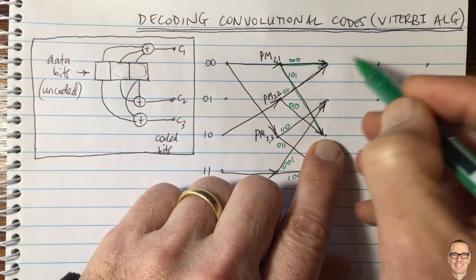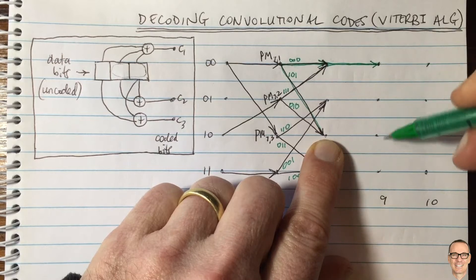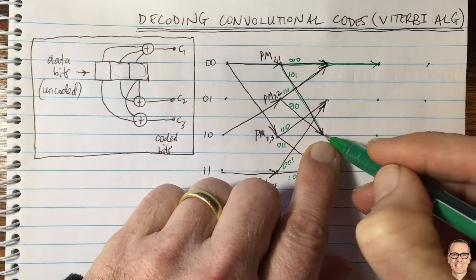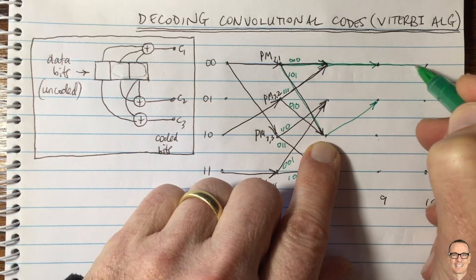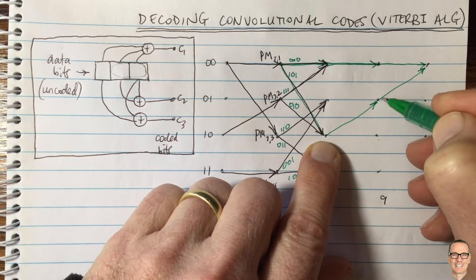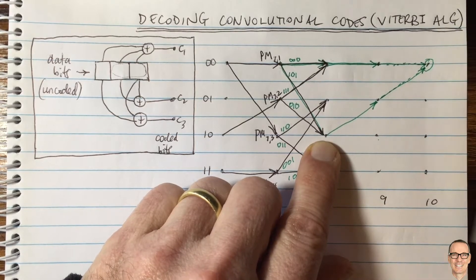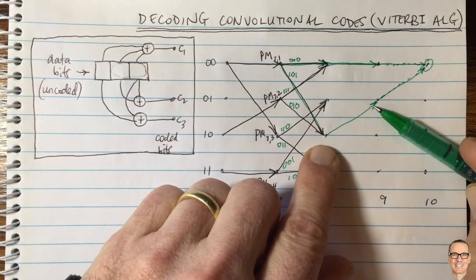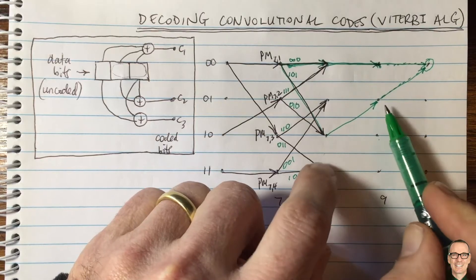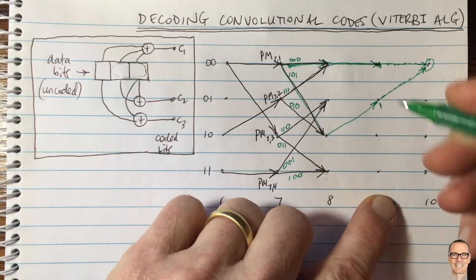At each time slot and for each state, the algorithm chooses one of the incoming paths. For example, let's say for this state it chose this path, and for another state it chose another. Each chosen path carries a path metric accumulated from all prior decisions. The specific coded bit outputs along these paths — for example 000, 101, 110, and 111 — are what get compared.